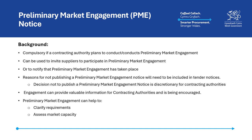Furthermore, engagement can help the contracting authority to better understand the market's capacity, and what solutions or type of goods exist in the market in which they are procuring that may meet the need they are trying to satisfy. And ultimately, this can inform the intended procurement strategy of the authority, as intelligence from market suppliers may highlight alternative approaches to meeting the need the procurement is intended to fill, or identifying potential difficulties in procuring particular goods or services.